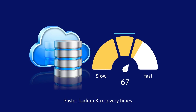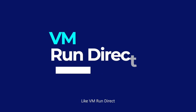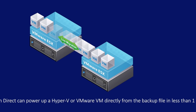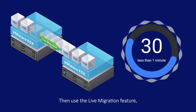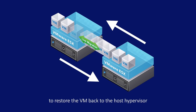Faster backup and recovery times. Different recovery options for every situation. Fast recovery options like VMware RunDirect can power up a Hyper-V or VMware VM directly from the backup file in less than one minute. Then use the live migration feature to restore the VM back to the hypervisor while it is still running, minimizing system downtime.